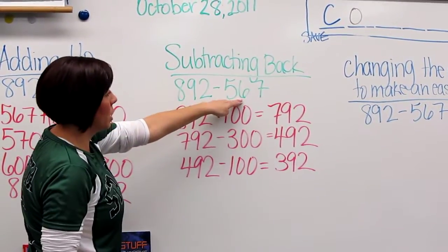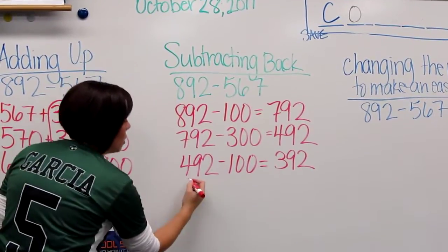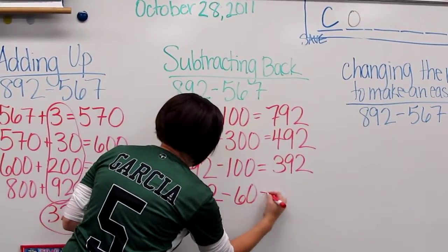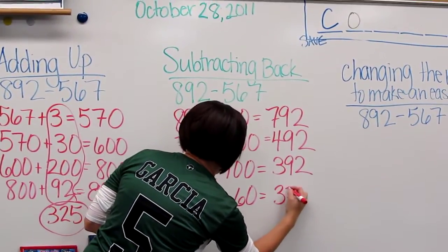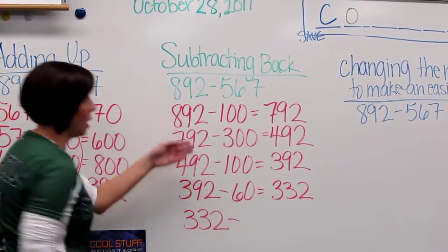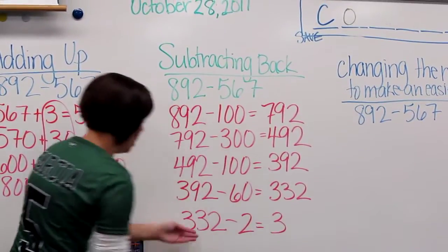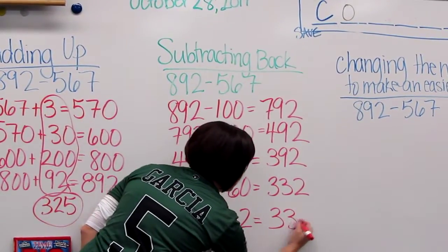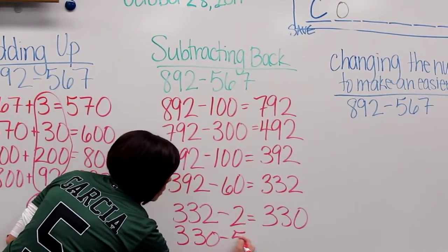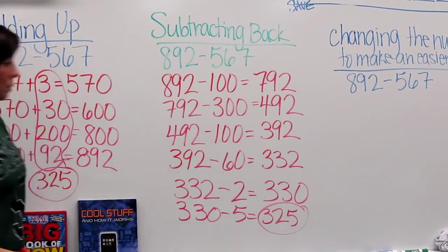And then they would start looking for other chunks. They could break up 300, 400, 500. Then they could look back. 392 minus 60 is easy. And then for some kids they might go, I don't know what 2 minus 7 is. So they might even break it up even more. 332 minus 2 gives me 330. And then they know they have 5 left. 325.